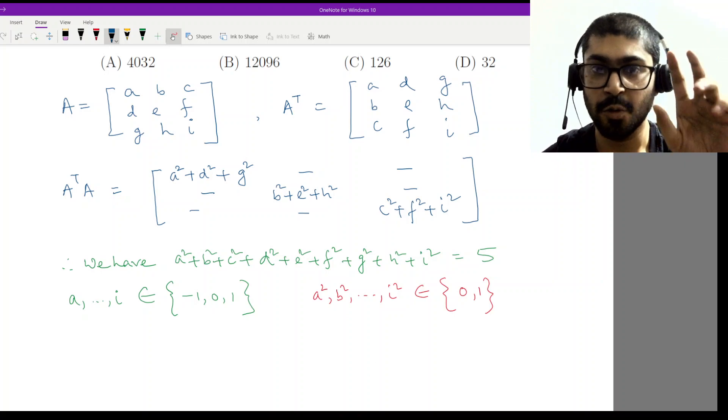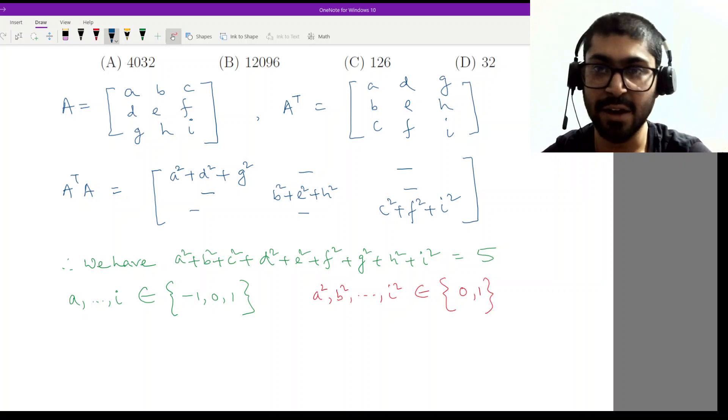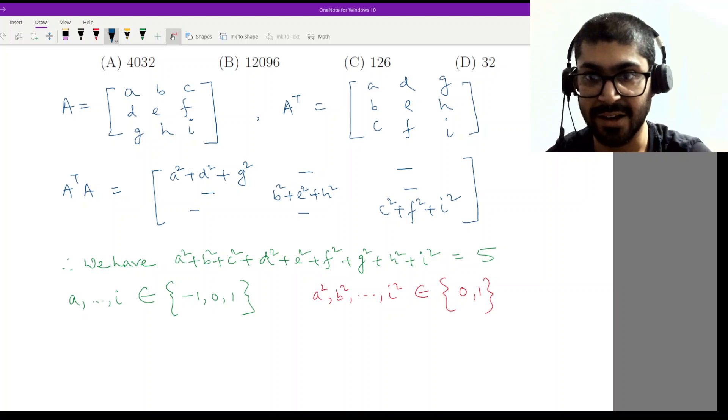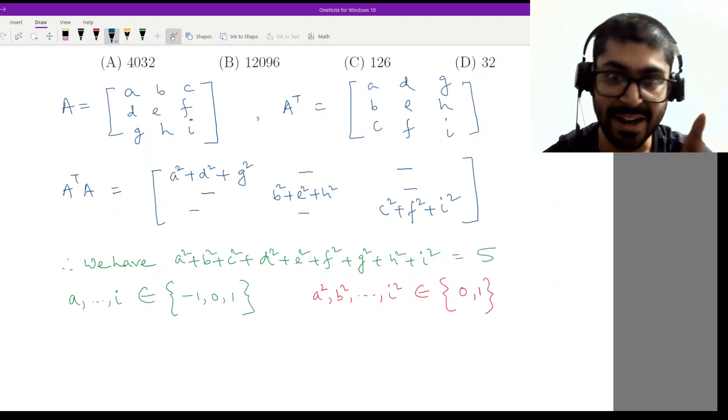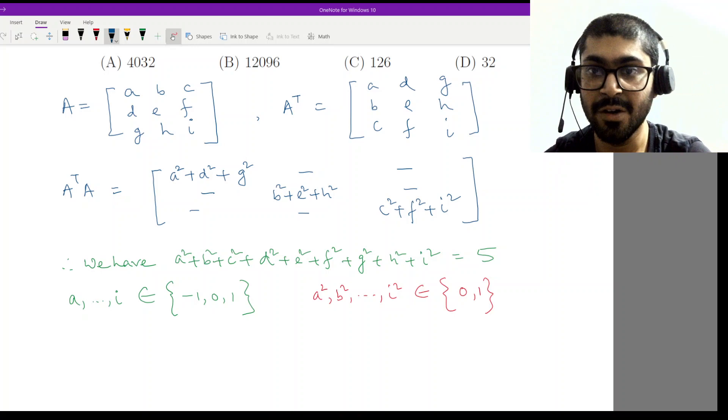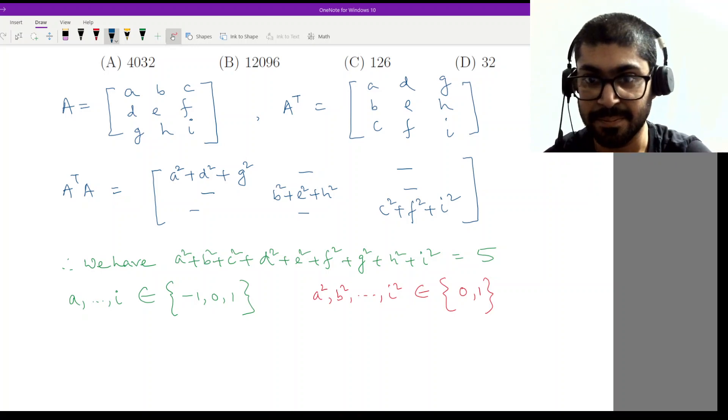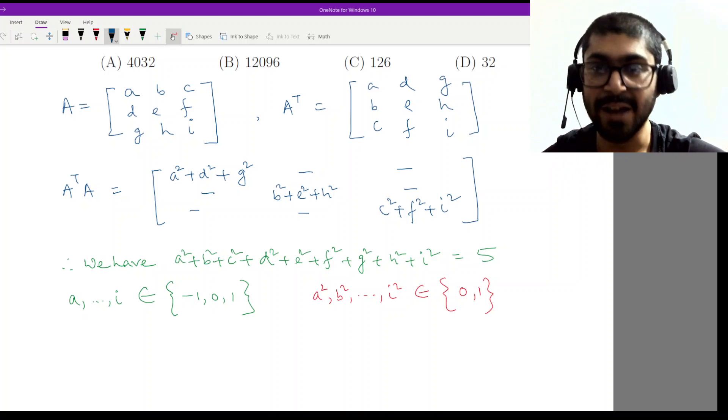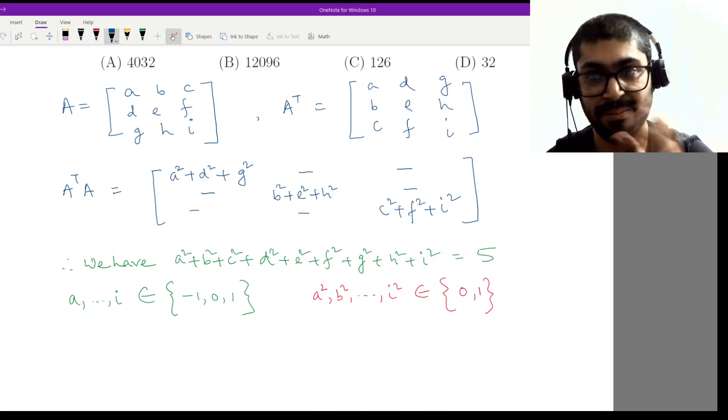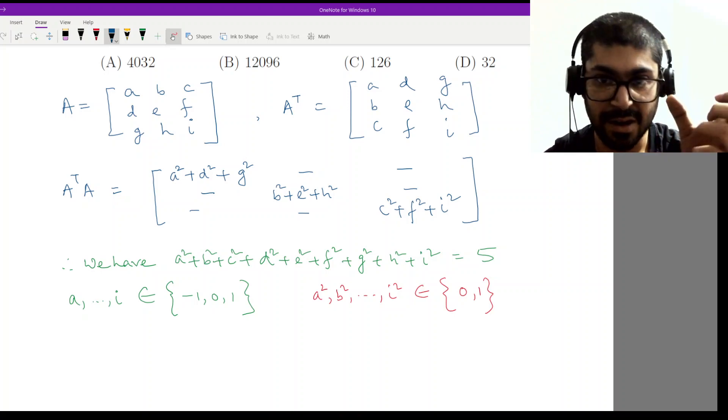Any five of these nine values could be one and the rest zeros. When I am saying that these five should be one, I'm just talking about the squares of them. Whatever value a, b, c, d individually may take, plus one, minus one, doesn't matter.